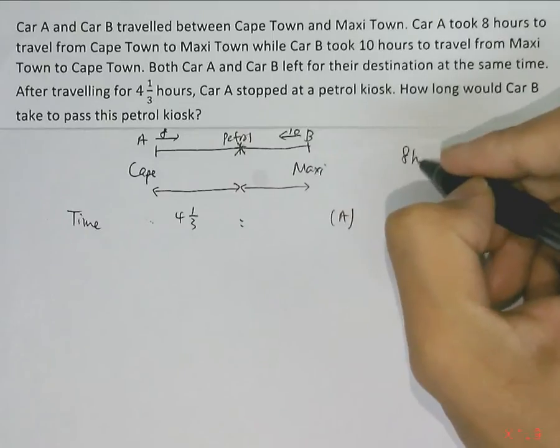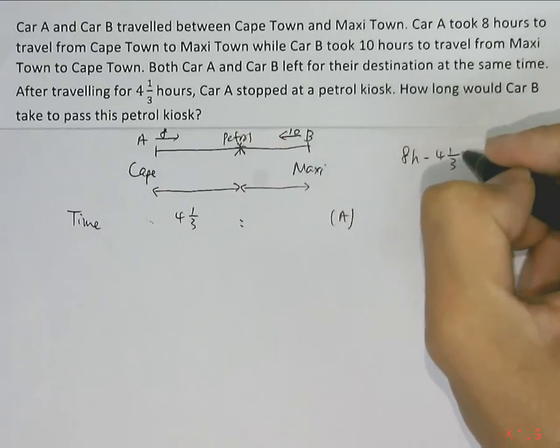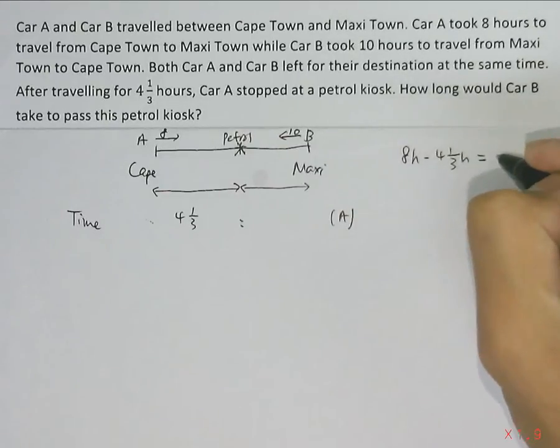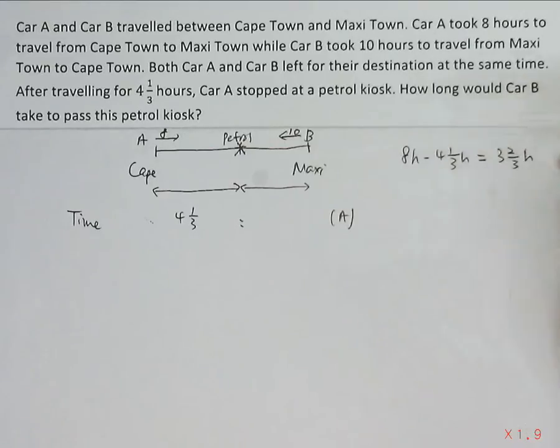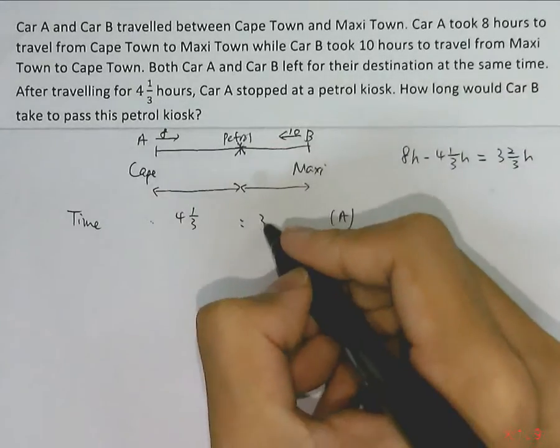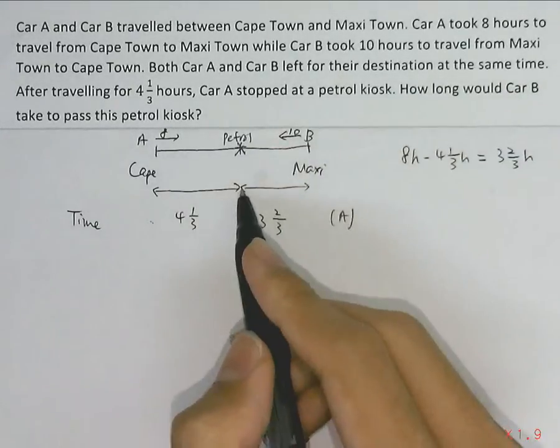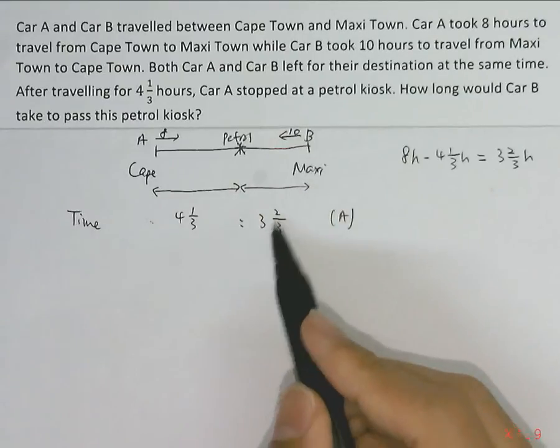8 hours, subtracting off 4 and 1/3 hours, that will give us 3 and 2/3 hours. So the time taken to travel from the petrol kiosk to Maxi Town will be 3 and 2/3 hours.